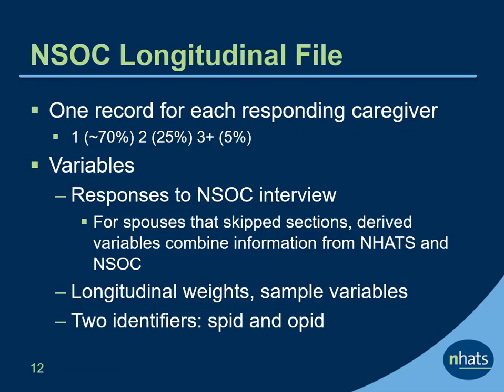The data from interviews with continuing caregivers are included in the NSOC longitudinal file. The file includes one record for each caregiver who responded to NSOC. We have found about 70% of eligible SPs have one responding NSOC helper, 25% have two, and about 5% have three or more. The file includes responses to the NSOC interview. For spouses that were routed around some questions, derived variables are provided that combine information from NHATS with NSOC. Each record also includes a set of longitudinal weights, sample variables, and two identifiers, the SP ID and the OP ID.